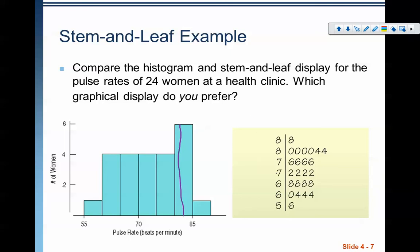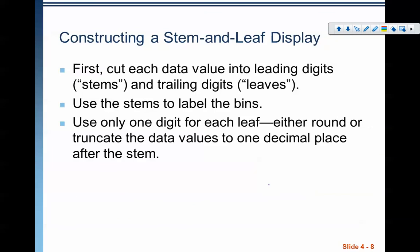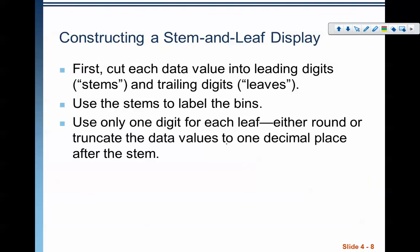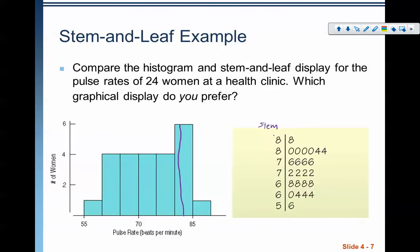So the way we create a stem and leaf plot is kind of similar to that histogram. We cut each data value into its leading digits. So this over here is the stem. So the leading digit being 8, 8, 7, 7, 6, 6, 5. We use the stems to label the bins. So we still have bin lengths. This one over here is the 80 to 85. This one up here is the 85 to 90. Again, you can create that to be whatever size you need it to be.